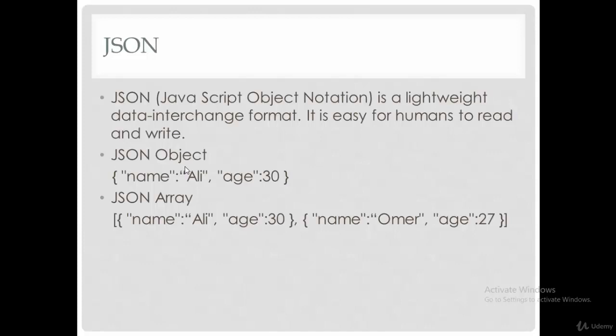The JSON object is used to retrieve data about one element, for example data about one employee, one book, or one student. While JSON array is data about a set of elements, for example a set of employees or set of books.